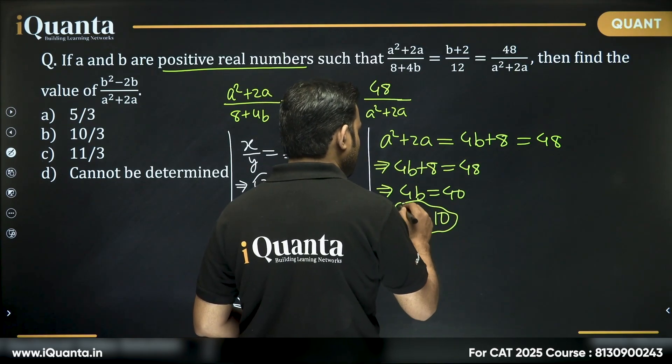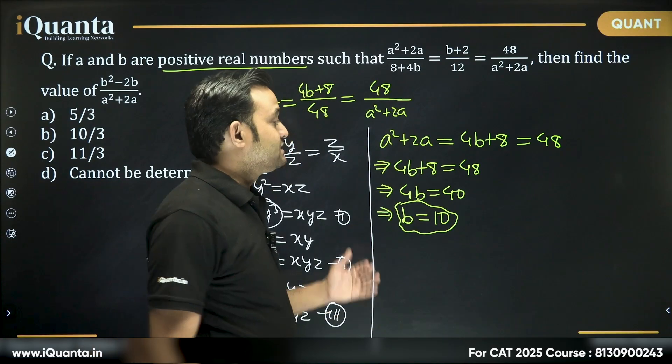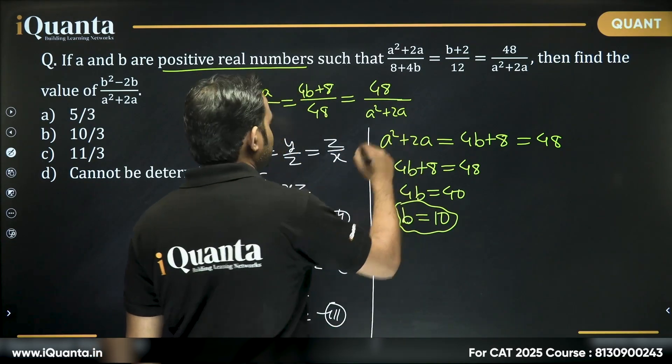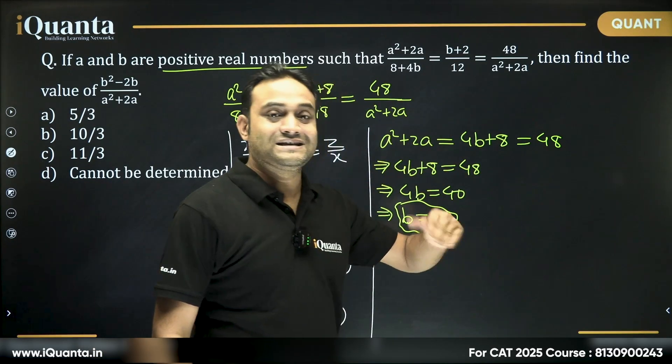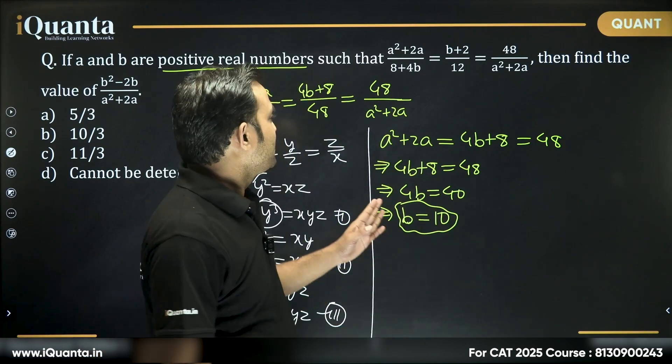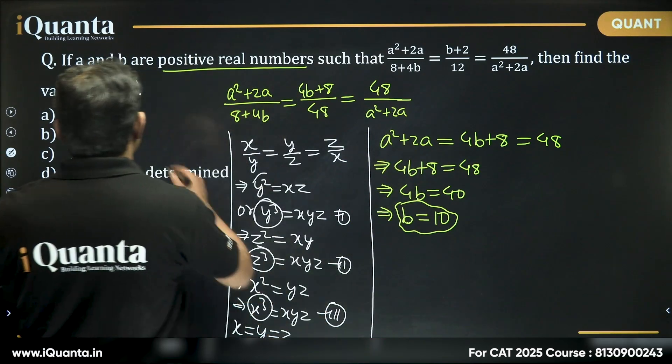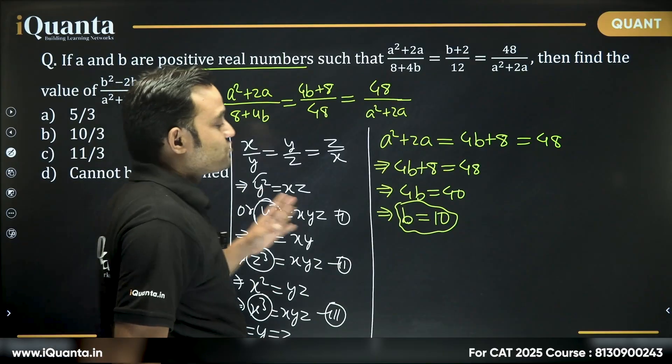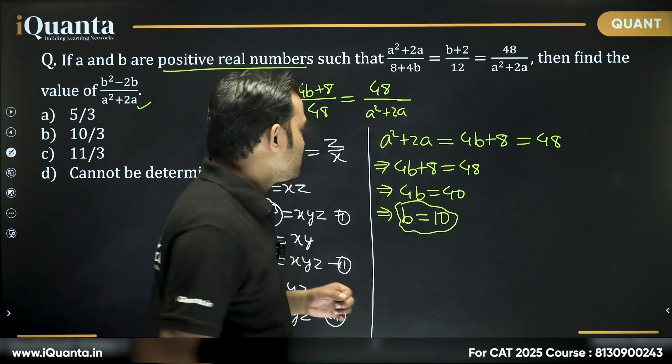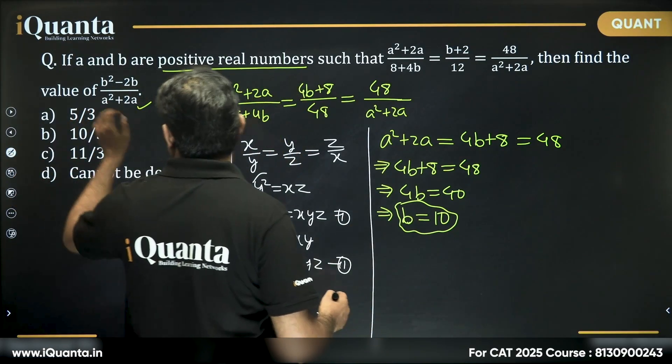So, b is equal to 10 is the one result that we got. Then can I say a² + 2a will be 48 straight away. Right, this is the denominator a² + 2a. We do not even need to find the value. So, what will be the value of this expression?